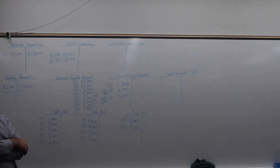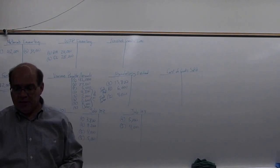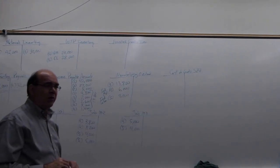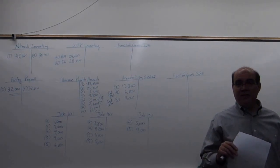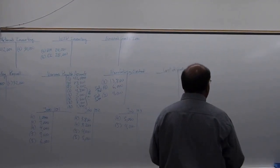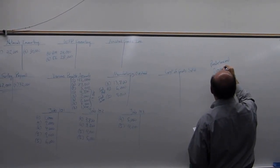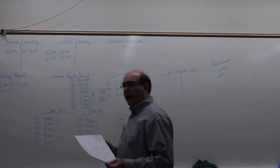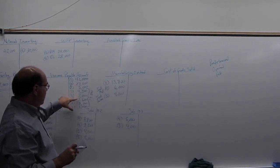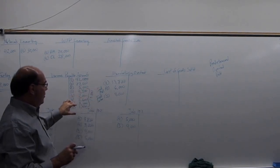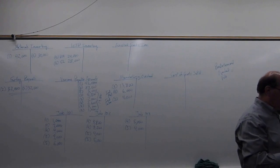We're going to use overhead allocation with a predetermined overhead rate, discussed on page 764. Instead of spreading seven different overhead bills across 30 jobs individually, we use a formula. At the beginning of the year, someone determines our estimated overhead costs and chooses an activity base — in this case, direct labor cost — because jobs that require more labor should bear more overhead.